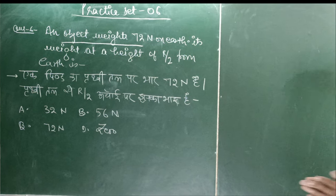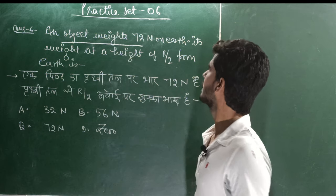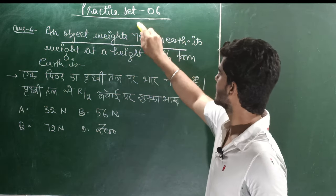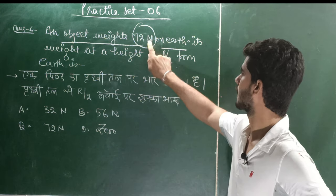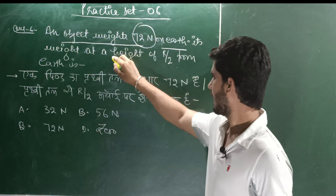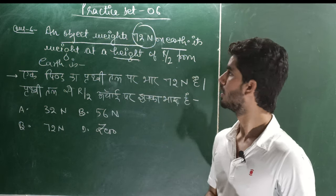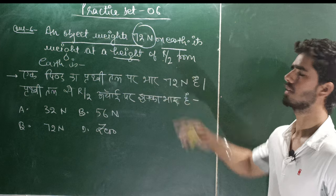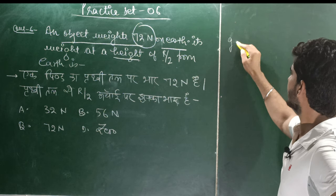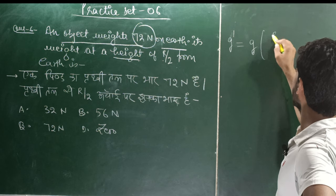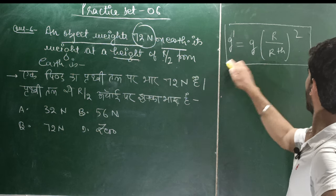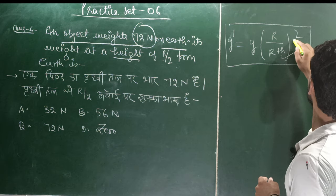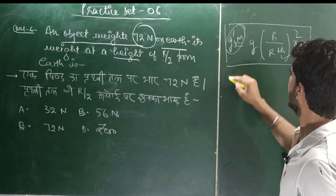Question number 6: an object weighs 72 Newton on Earth. What is its weight at a height of R/2 from Earth? The object's weight on Earth is 72 N. At height h = R/2, I need to find the new weight. The formula relating weight at height to surface weight is: W' = W × [R/(R+h)]².